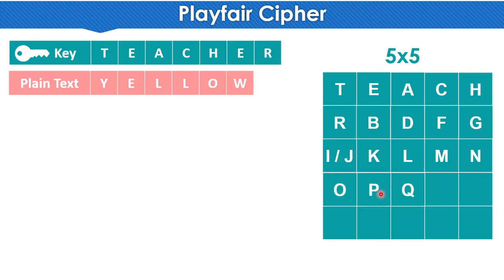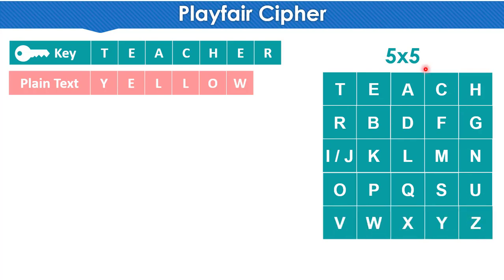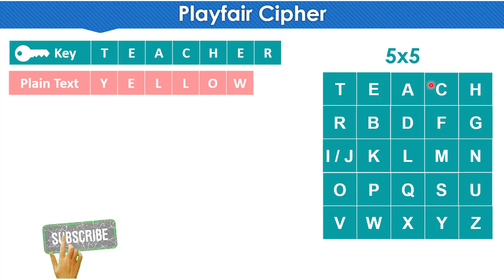Completing the table after N: O comes, then P, Q. Then R — but R is already written. So S comes next, then T — but T is already written. So U comes, then V, W, X, Y, Z. This is how we build the complete five by five table with the key 'teacher' filling it.